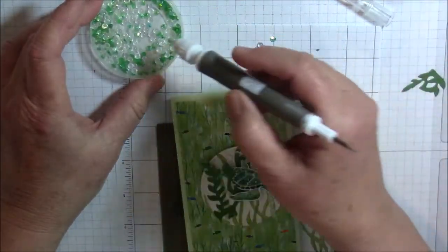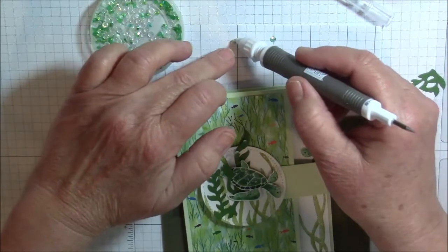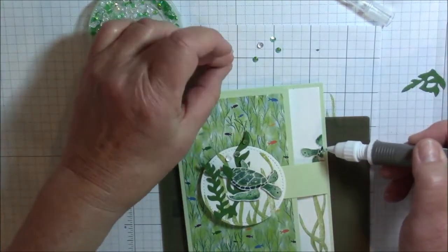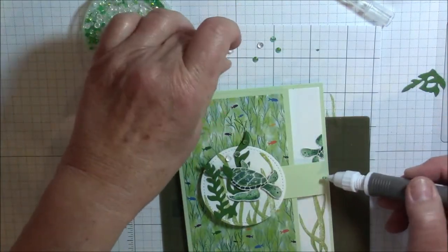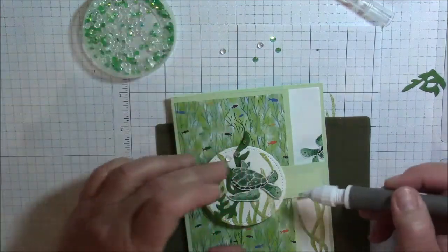We are going to want four to six on the background because I always do things in odd numbers. Now I am looking at my card and seeing that little guy there peeking out here.